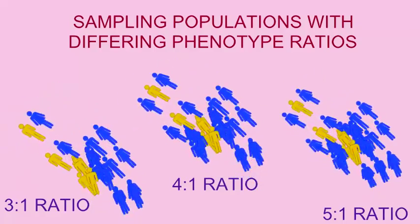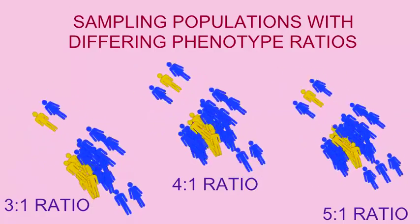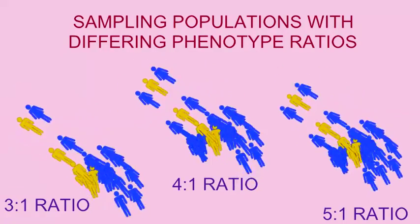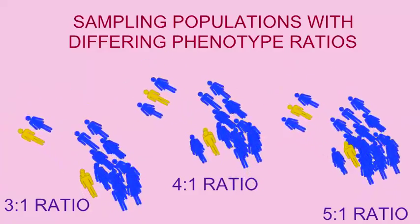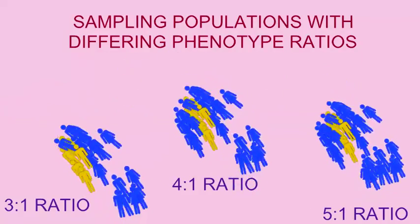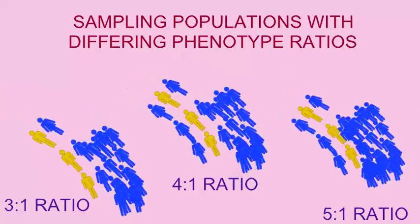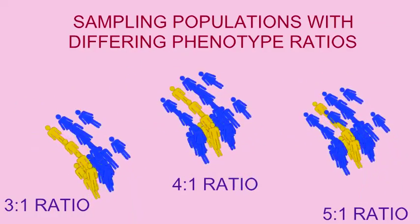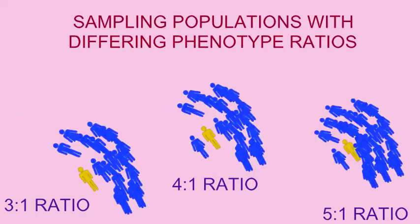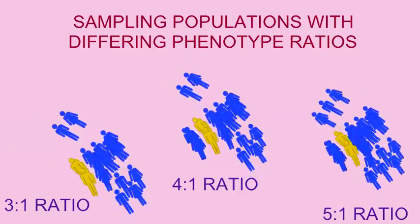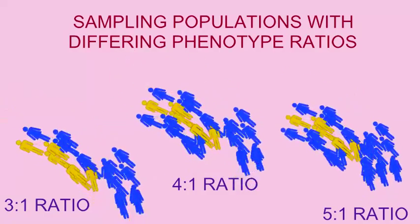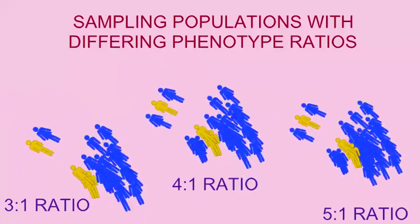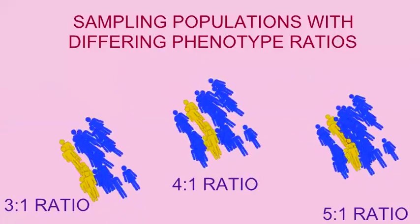it is possible, especially if your sample size was smaller, that the ratios one received would not be exactly 3 to 1, 4 to 1, or 5 to 1. And therefore, one could confuse a 3 to 1 ratio which did not come out exactly as predicted with perhaps a different type of ratio.